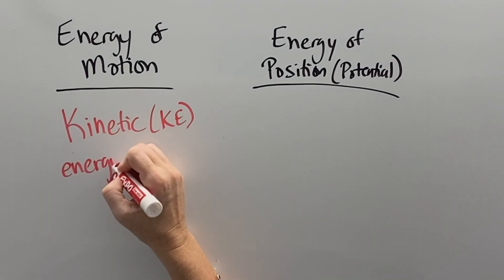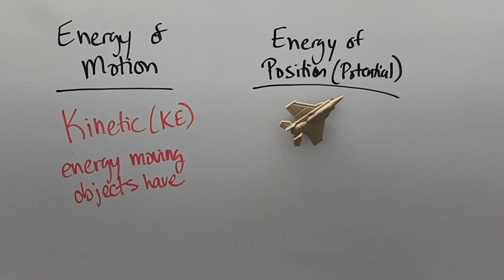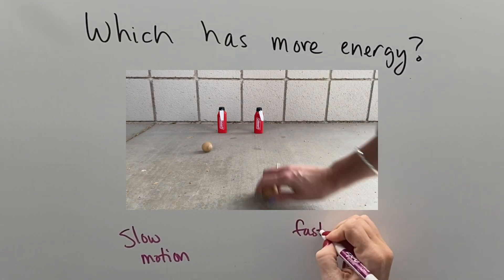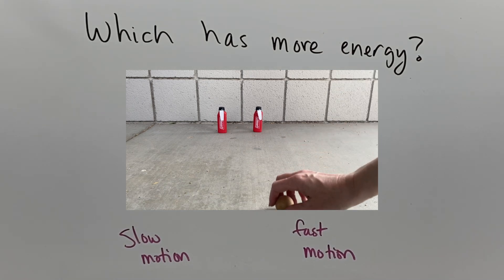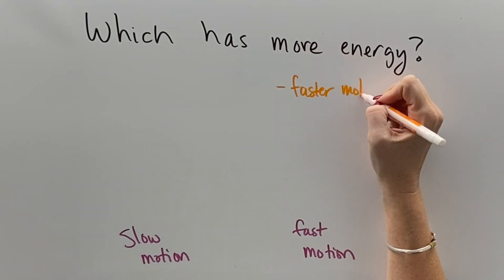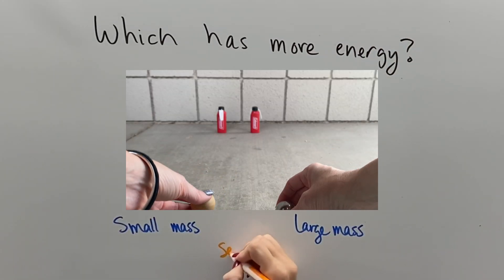So energy of motion number one, kinetic energy, is the energy that moving objects have, like this airplane. Slow motion objects have less energy than fast moving objects. As you can see, the fast moving object has enough energy to have enough force to knock something over. So the faster motion something has, the more kinetic energy it has.